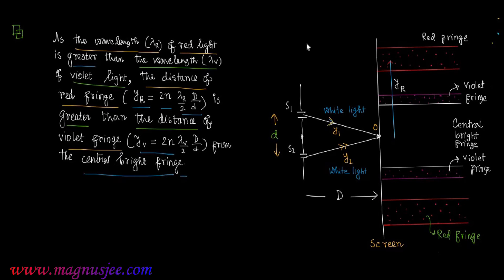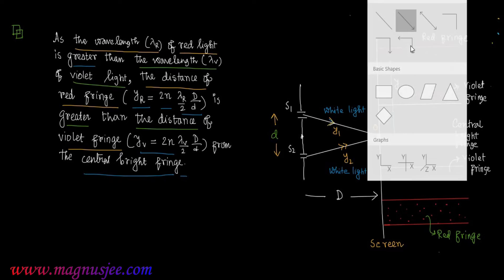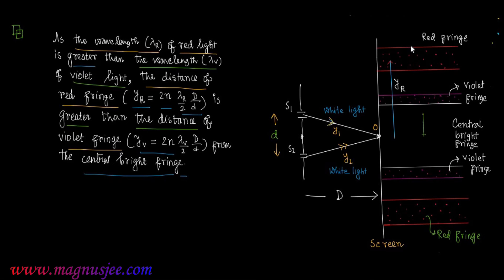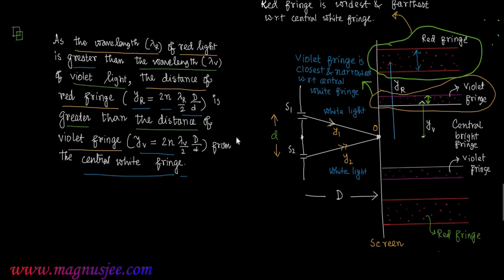In the diagram, Y_r is the distance of the red fringe from the central white fringe, and Y_v is the distance of the violet fringe from the central white fringe, or from the center of the white fringe.